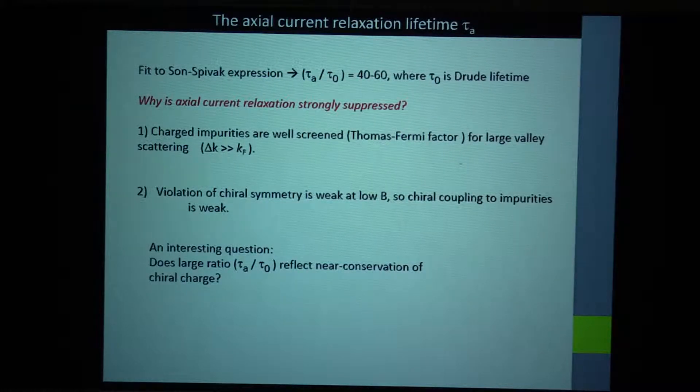So before I mention that, this takes the point that the axial current relaxation is very large, completely Drude-like. So why is the axial current relaxation so slow? In the original Nielsen-Ninomiya calculation, they required the Weyl nodes to be very far apart. And therefore, if this were charged impurities screened by, say, a Thomas Fermi factor, large momentum scattering would diminish the matrix element. So that was their mechanism to see an enhanced current.